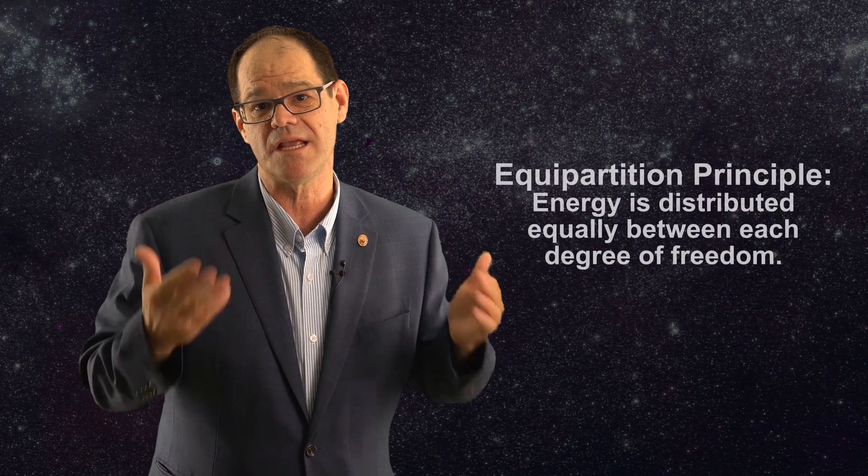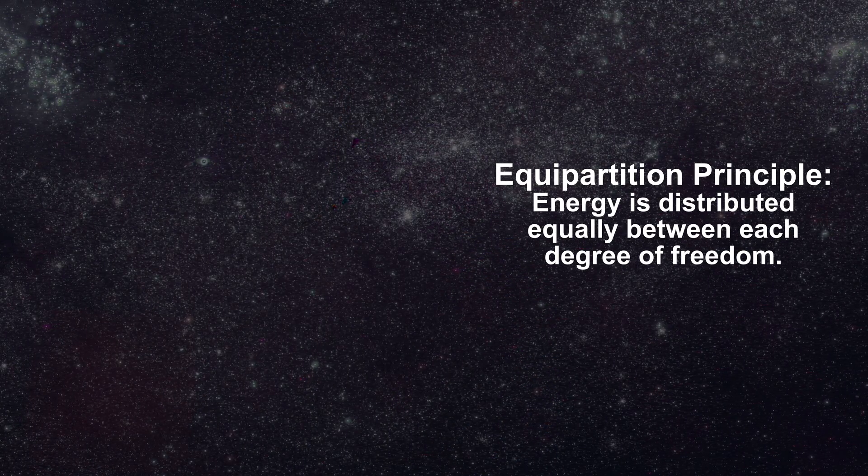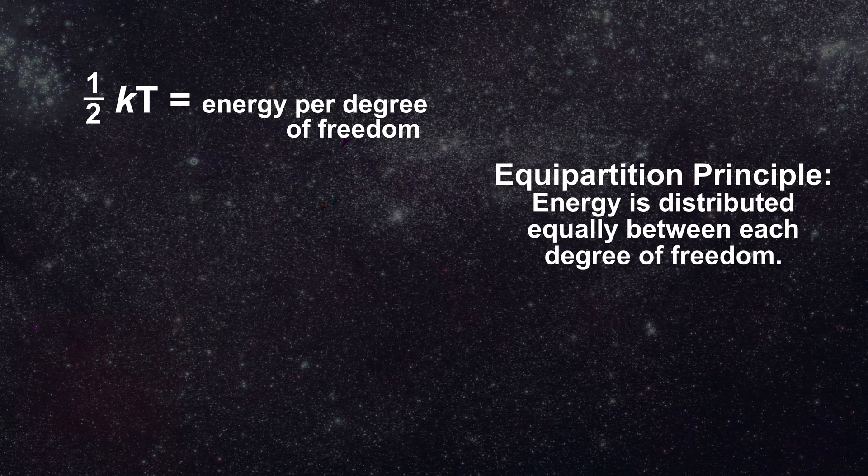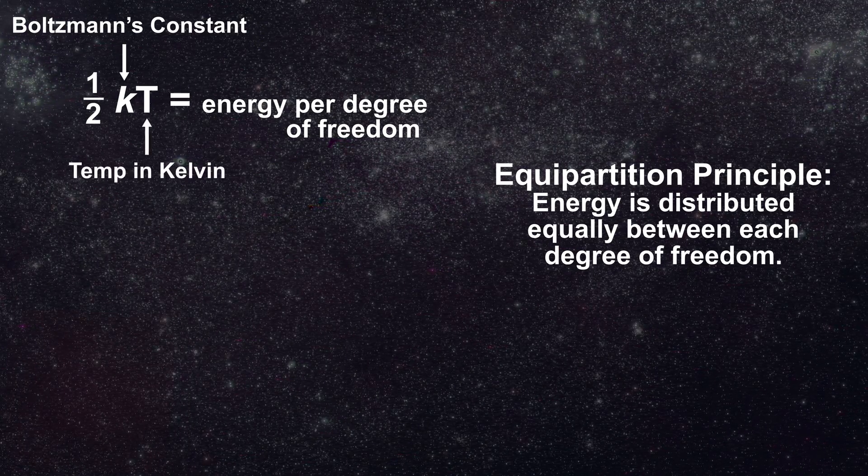The equipartition principle states that the energy is distributed equally into the available degrees of freedom. Each degree of freedom contributes one half kt to the total energy of the system where k is Boltzmann's constant and t is the absolute temperature in Kelvin.